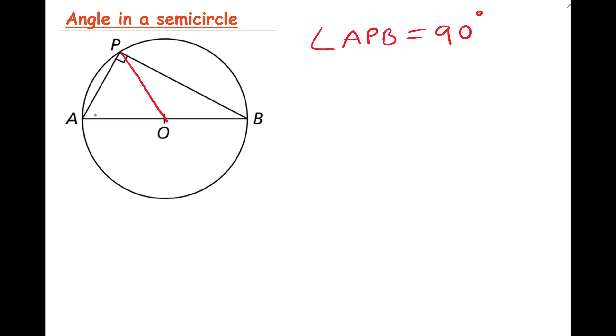Now we know that a radius of a circle is always the same length. So OA is a radius, OB is a radius, and OP is a radius. So we can say that these three lines are equal.